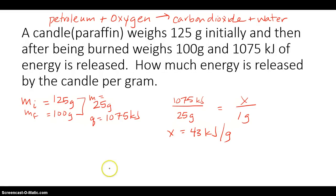Now, scientists will use dimensional analysis. They will say, I know that one gram of paraffin is what I'm looking for, and I know that 25 grams release 1075 kilojoules. If I cancel them out, this works out to be also 43 kilojoules per gram.